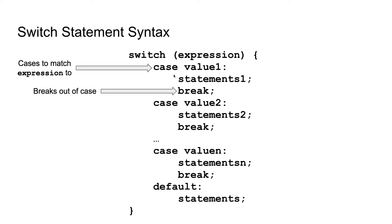This is what switch statements look like. They have a switch keyword indicating the start of the switch statement, and then an expression that is tested. This expression must be of integral data type. That could be an integer, a long, a long long, a short, a character, a bool, or any other integral data type.